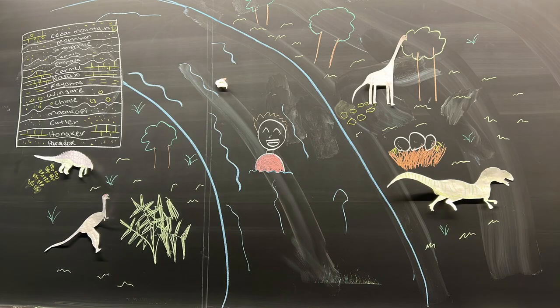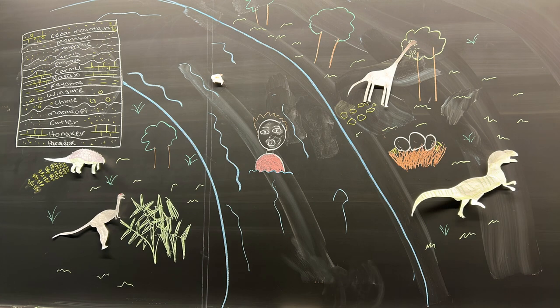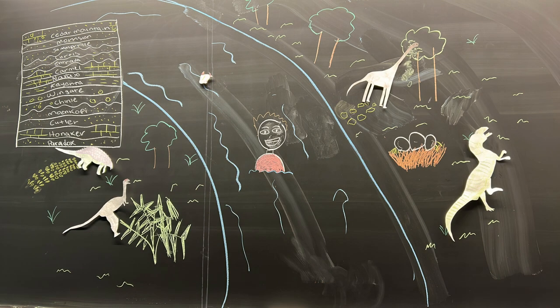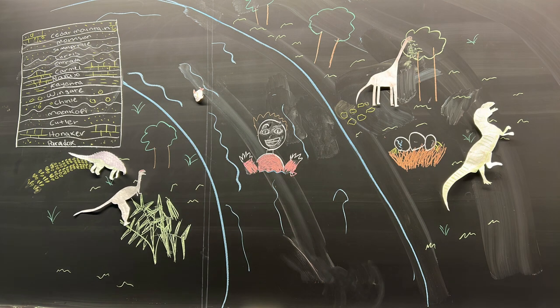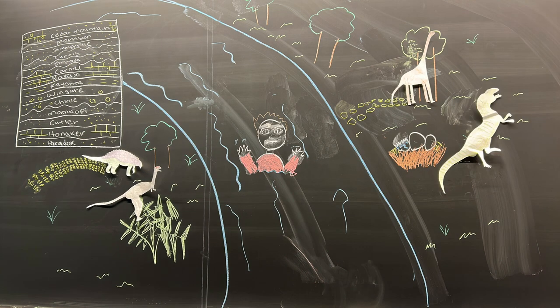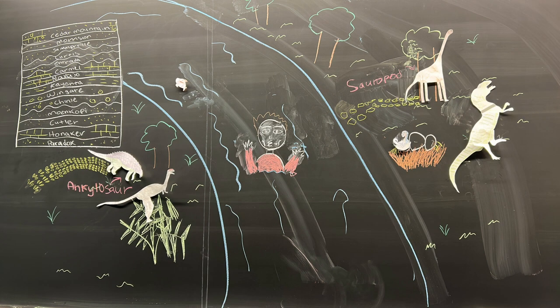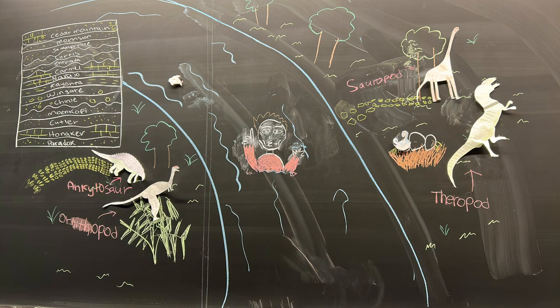We're now arriving at the time of the Cedar Mountain Formation. The park is full of rivers at this time, which makes it ideal for fossil deposition. This formation has a lot of dinosaurs, which includes sauropods, ankylosaurs, ornithopods, and theropods.